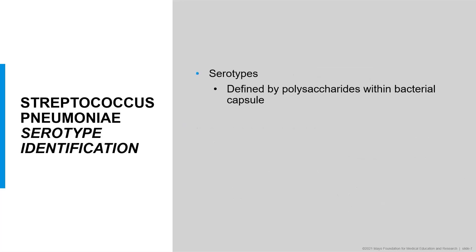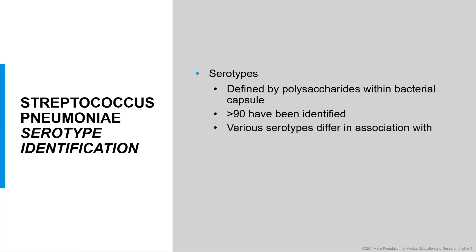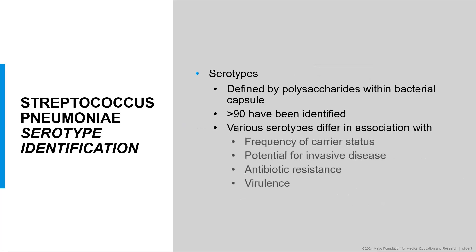The polysaccharides present in the bacterial capsule of Streptococcus pneumonia define various serotypes of the bacteria. To date, more than 90 serotypes have been identified based on differences in the polysaccharides present in the bacterial capsule. The characterization and identification of these serotypes is important, as there are critical differences in their behavior — some are found more frequently in carriers, others have higher potential for invasive disease, antibiotic resistance, or increased transmission between individuals.